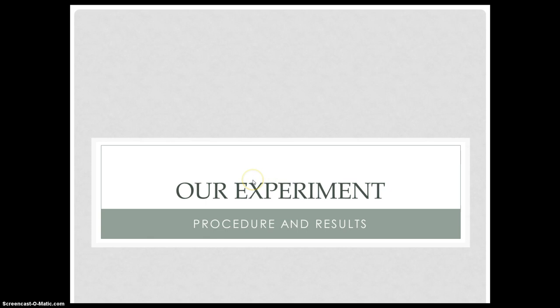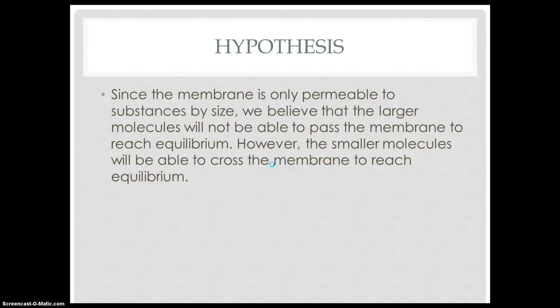This was our experiment — the procedures and results. In our experiment, we were supposed to test whether certain molecules could pass through an artificial membrane to reach equilibrium. Since the membrane is only permeable to substances by size, we believe that the larger molecules will not be able to pass the membrane to reach equilibrium. However, the smaller molecules will be able to cross the membrane to reach equilibrium.